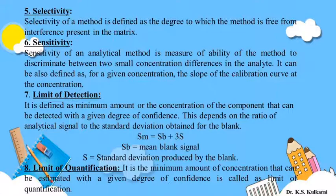The next definition is limit of quantification. It is the minimum amount or concentration that can be estimated with a given degree of confidence, and this is called the limit of quantification.